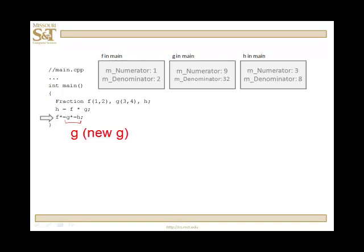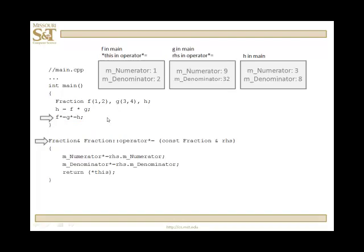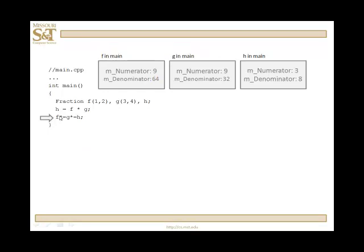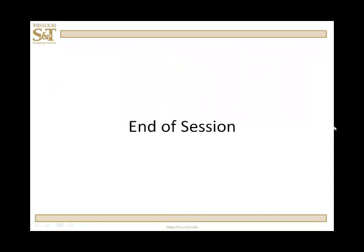But g has been changed, so it's the new g. Now we're going to call star equals again. But this time, g is going to be the right-hand side, and f is going to be the calling object. The numerator of f is now multiplied in by the numerator of g, and the denominator of f is multiplied in by the denominator of g. And I'm going to return the calling object, which is f. So what's happened? h has not changed, g has changed, and f has changed. We'll next look at a symmetric pair and see how we might define is-equals and not-equal.